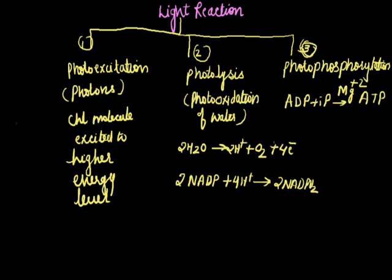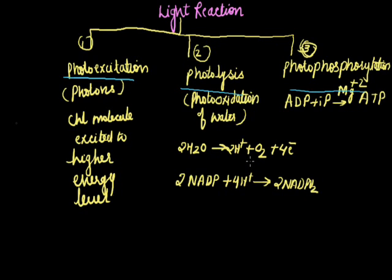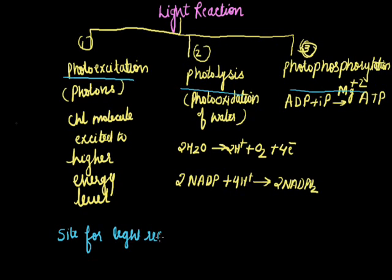To summarize the light reaction: it is divided into three steps — photo-excitation, photolysis, and photo-phosphorylation. In photo-excitation, the chlorophyll molecule receives sunlight as energy packets called photons. In photolysis, the water molecule breaks up; hydrogen ions are used for reduction of NADP to NADPH2, and oxygen is released. In photo-phosphorylation, energy is released as ATP; ADP combines with inorganic phosphate in the presence of magnesium ions to form ATP. The site for the light reaction is the grana portion of the chloroplast.